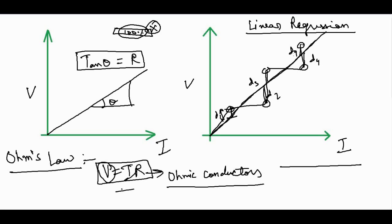Let me name the data points p1, p2, p3, p4, and p5. The average straight line I draw through these points must be such that the distances d1, d2, d3, d4, and d5 from the points to the line are as small as possible. We mathematically model this using least square regression.